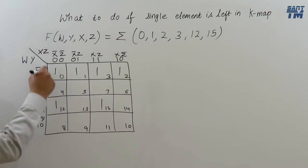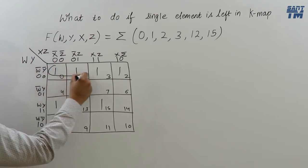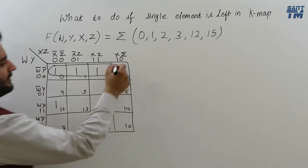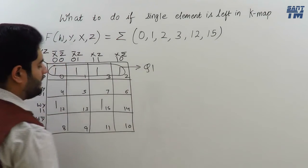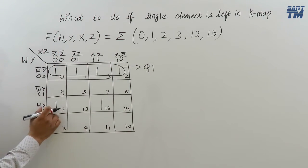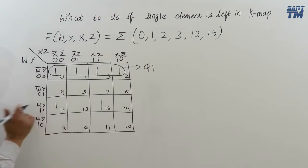no octet is possible, but this quad is possible. This is one quad. Label it as quad 1. And this one is not included in any of the octets, any of the quads, any of the pairs, but it is left single.